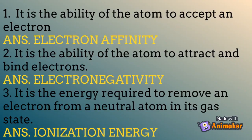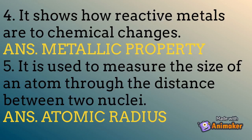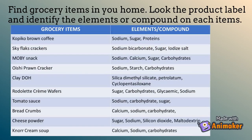Let's do the 'What's New' activity. Unscramble the letters to identify the words being described in each statement. One: it is the ability of the atom to accept an electron — answer: electron affinity. Two: it is the ability of the atom to attract and bind electrons — answer: electronegativity. Three: it is the energy required to remove an electron from a neutral atom in its gas state — answer: ionization energy. Four: it shows how reactive metals are to chemical changes — answer: metallic property. Five: it is used to measure the size of an atom through the distance between two nuclei — answer: atomic radius.